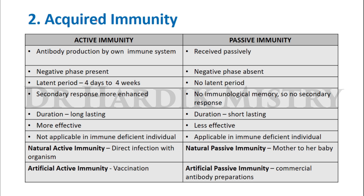Acquired immunity is of two types: active immunity and passive immunity. In active immunity, antibodies are produced by the body's own immune system. In passive immunity, antibodies are received passively. The negative phase is present in active immunity, and the latent period, which is around four days to four weeks, is also present in active immunity, but not in passive immunity. The secondary response is more enhanced and present in active immunity.